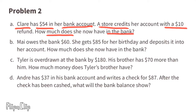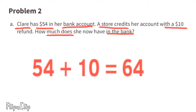Problem number two. Part a: Claire has $54 in her bank account. A store credits her account with a $10 refund. She started with $54, and the store put $10 into her account. $54 plus $10 is $64. Claire now has $64 in her bank account.